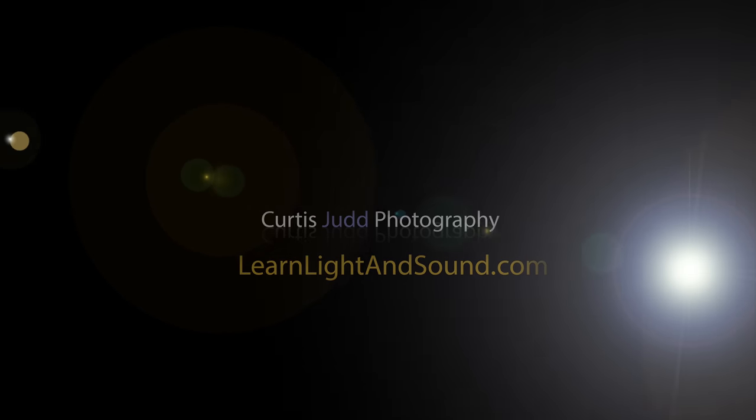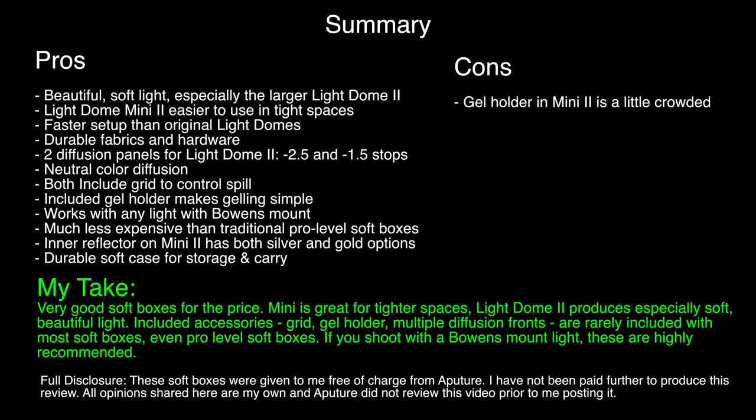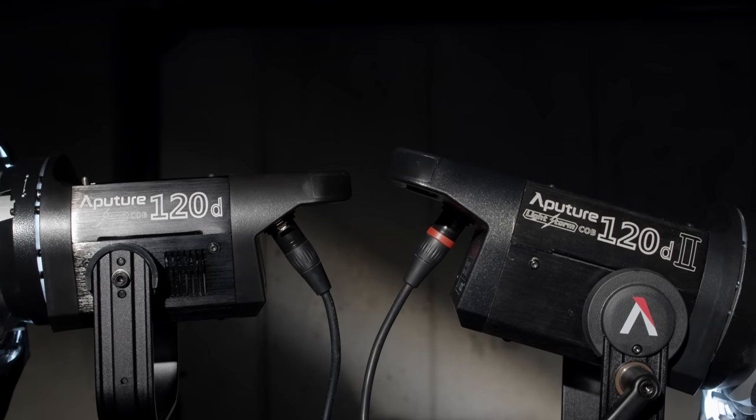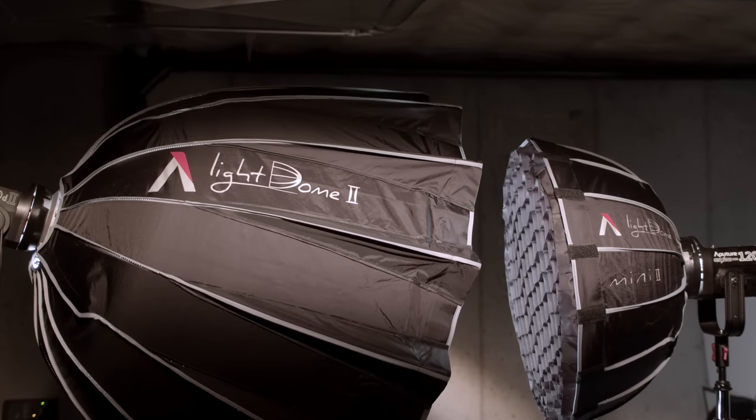In this episode we'll take a look at the Aputure Light Dome 2 and Light Dome Mini 2. If you shoot with the Aputure COB series of lights, the Light Dome 2 and the Light Dome Mini 2 are some really great additions.